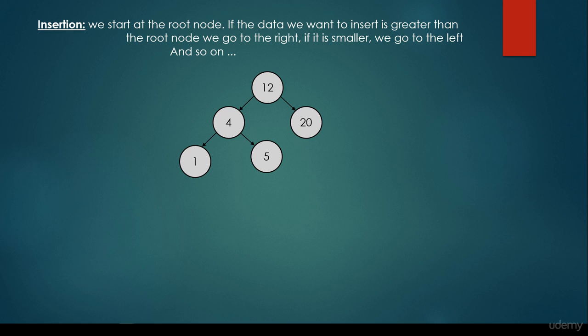So basically this is how we build up a binary search tree. We just have to consider nodes — if it's smaller, then we go to the left; if it's greater, we go to the right. Very simple.